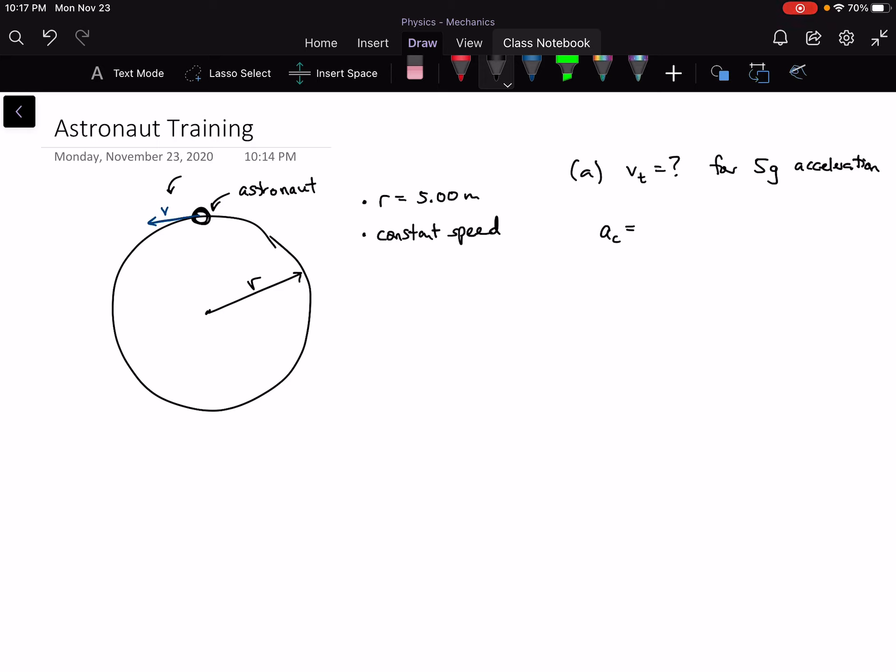He's clearly not accelerating tangent to the circle because otherwise he wouldn't be having a constant speed, right? He'd be speeding up or slowing down. So a_c is just that tangential velocity we're looking for, squared, over the radius of the circle that the astronaut is going in.